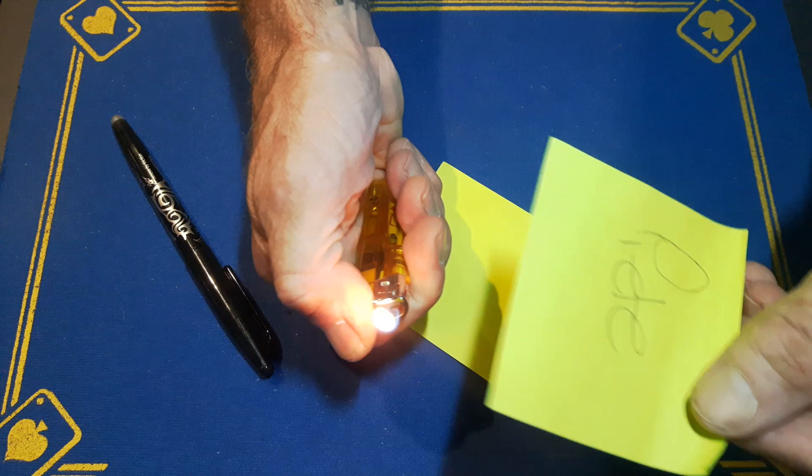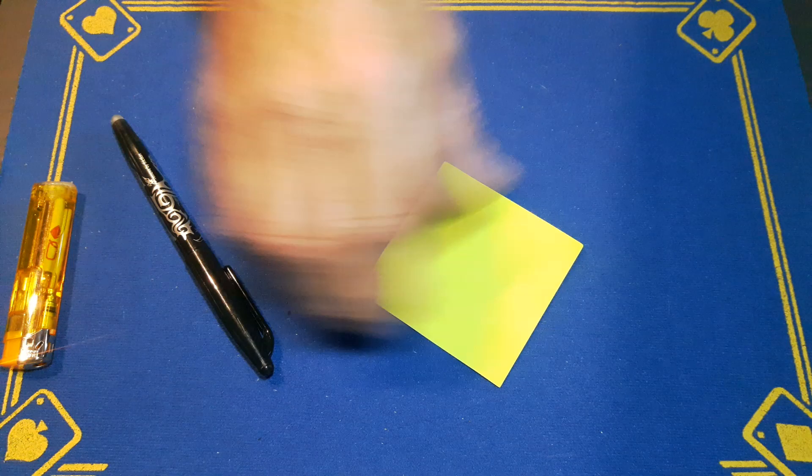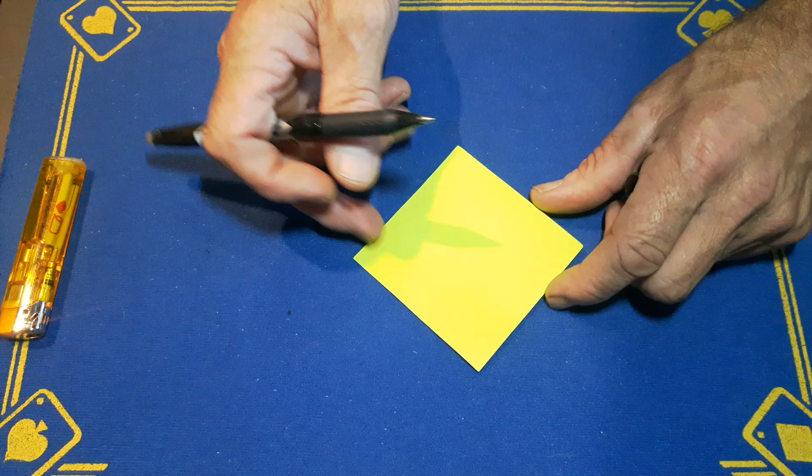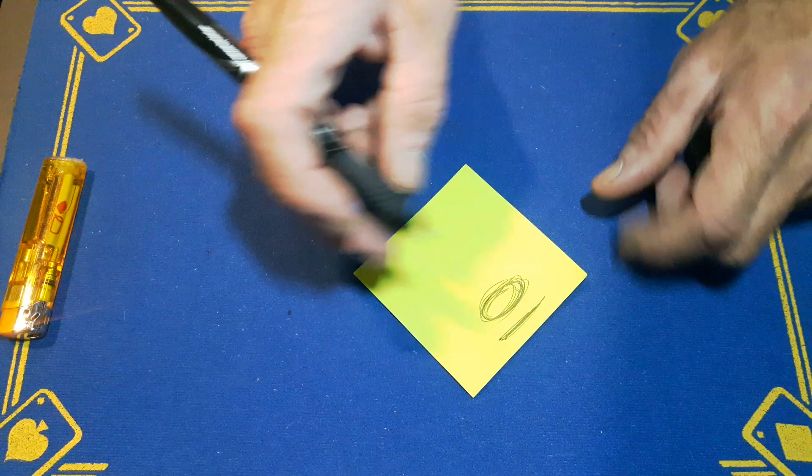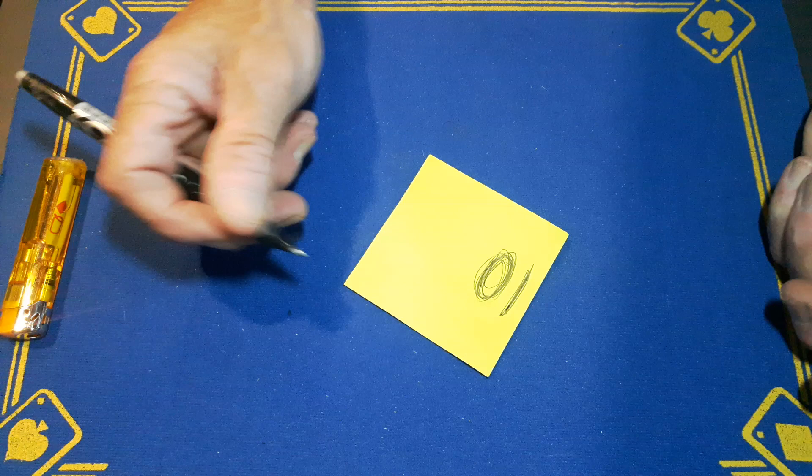So to start out, you're going to write your prediction. In my case, I'm going to write the 10 of clubs because the clubs is quite a big symbol. I can hide what I'm really going to write in there, and it doesn't matter if this looks a little bit scruffy. It's a good way of concealing the actual prediction inside.